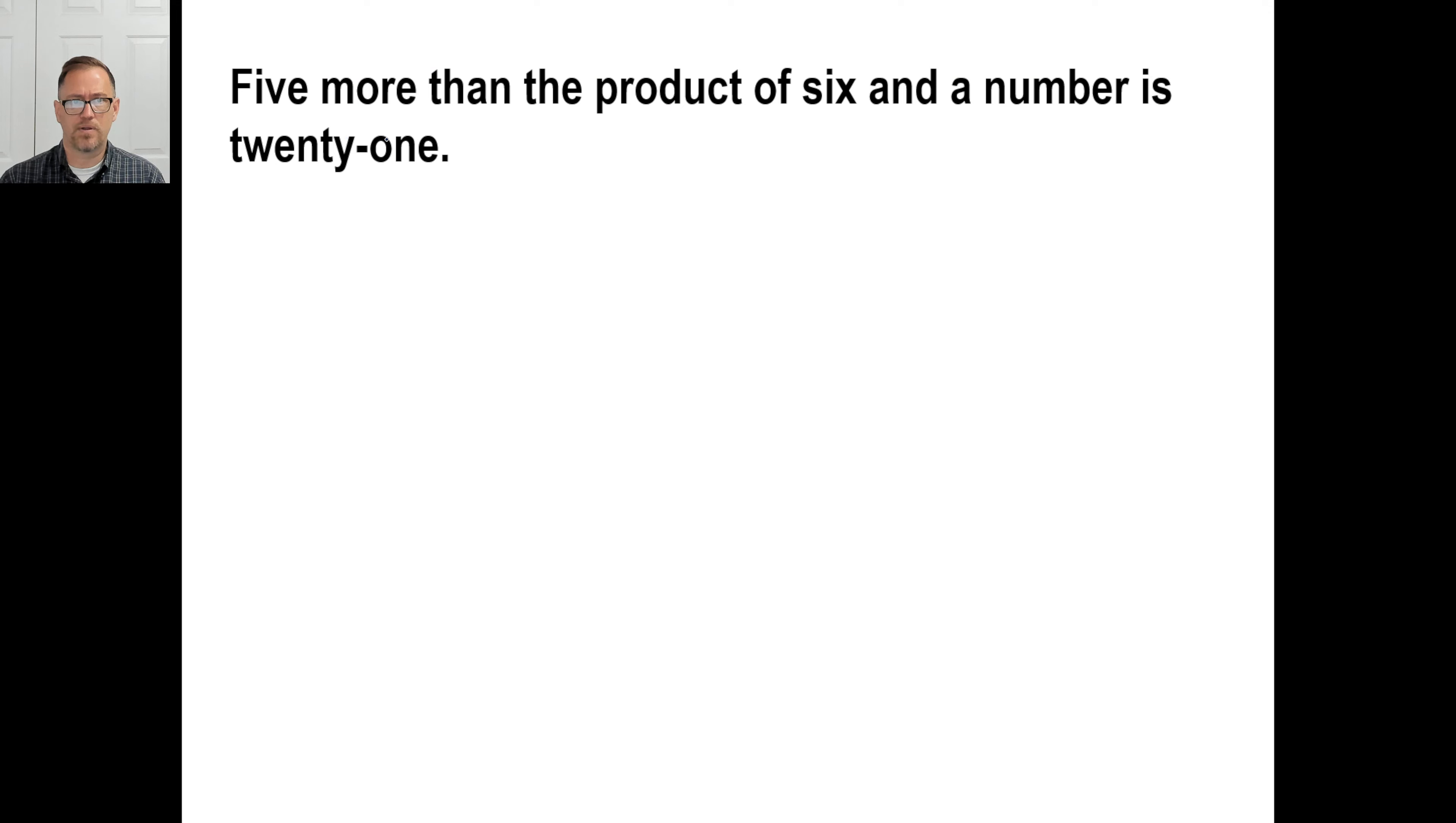Five more than. Now it means I'm going to add five to something. The product of six and a number. The product of six and a number is equals 21. There. Got it. Five more than. The product of six and a number is 21.